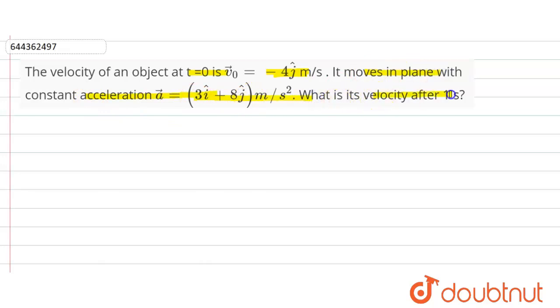Using the equation of motion v equals u plus at. Now write the equation of motion in vector form. So acceleration a is equal to 3i cap plus 8j cap meter per second square.